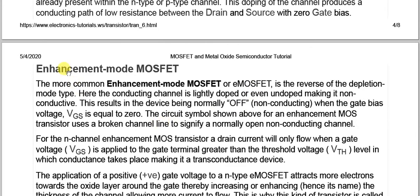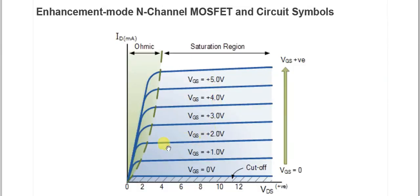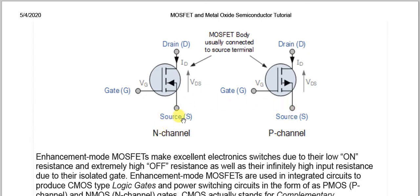For the enhancement mode MOSFET, the description is given and the characteristic curve shows a change in polarity compared to the depletion mode. The output characteristic curves are similar to those explained for the JFET and depletion mode MOSFET, and also similar to the bipolar junction transistor. The circuit symbols for the enhancement MOSFET are also shown.